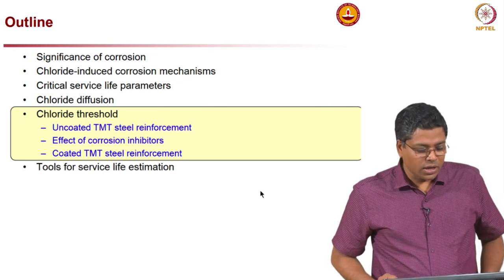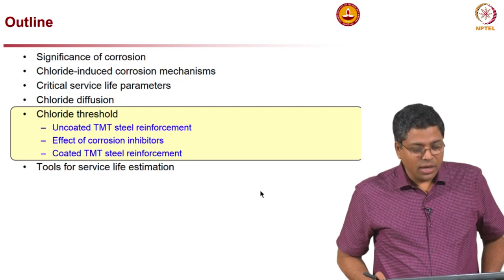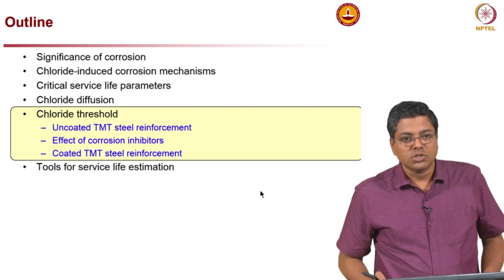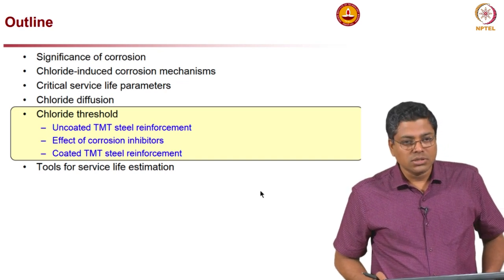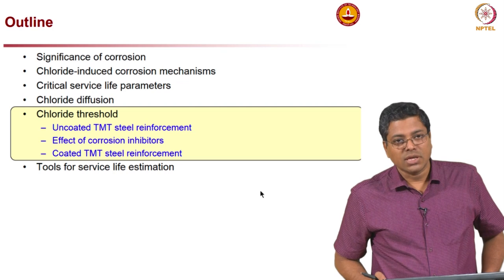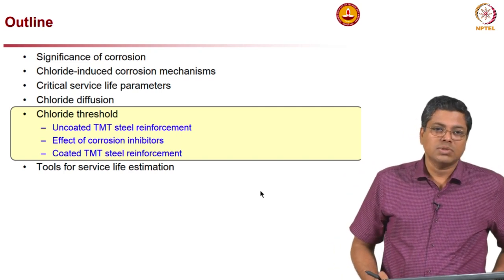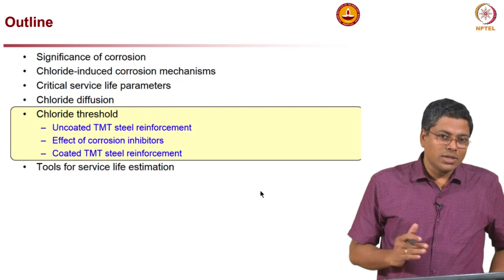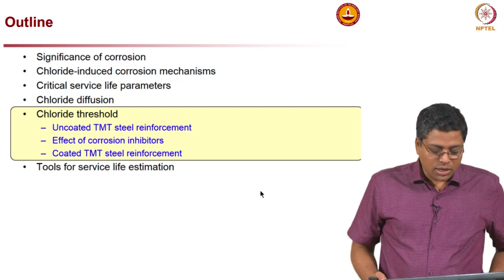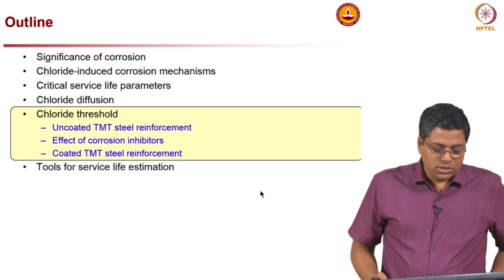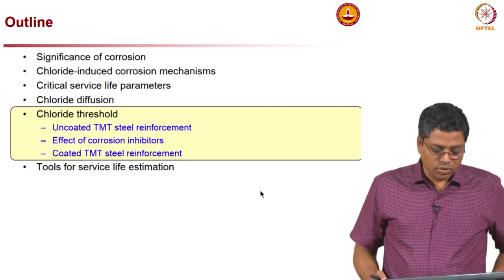In part 1 we covered chloride diffusion coefficient, and today we will talk about chloride threshold. We will cover how the threshold of uncoated steel reinforcement can be estimated, the effect of corrosion inhibitors, the effect of coated reinforcement, different test methods, challenges associated with different types of steel, and tools for service life estimation.